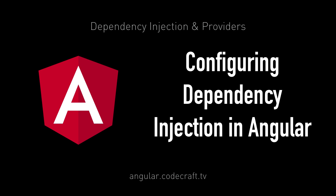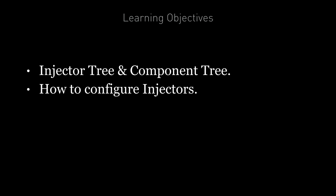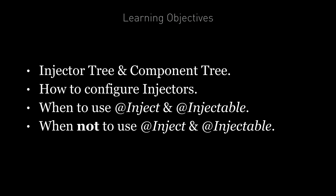So far in this section, we've only covered how to use a low-level dependency injection API. But with Angular, we'll never actually need to create injectors ourselves. Angular does this for us automatically when our application is bootstrapped. All we need to do is configure Angular with our providers and tell it when we want something injected into a class constructor. By the end of this lecture, you'll know what the injector tree is, how to configure injectors in Angular, and when to use the inject and injectable decorators — including when we don't need them.